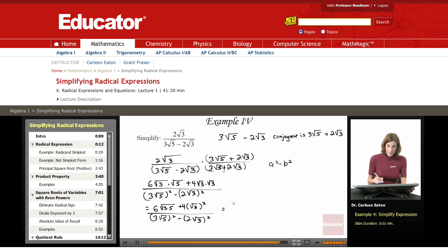The next step is 6, 3 times 5 is 15 plus 4. A radical times itself is the radicand, so that gives me 3 divided by 3 squared: 3 times 3 is 9. √5 squared is going to be 5, minus 2 squared is 4, √3 times itself is 3.